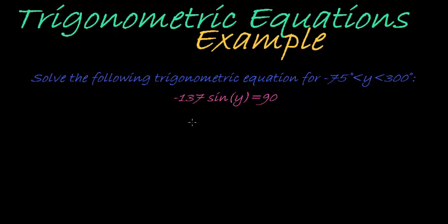So let's continue solving that. The first step, as always, would be to get a trig ratio equal to a constant. Up to this point this has been quite easy, all we do is divide both sides by that negative 137, so we get something like this.